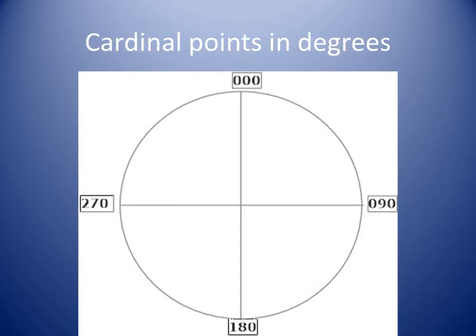The cardinal points expressed in degrees are as follows. North is usually zero zero zero degrees, sometimes three six zero degrees is used. East is zero nine zero degrees. South is one eight zero degrees. West is two seven zero degrees.